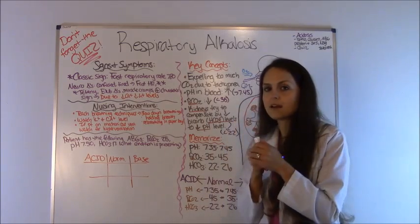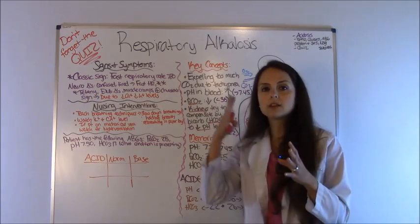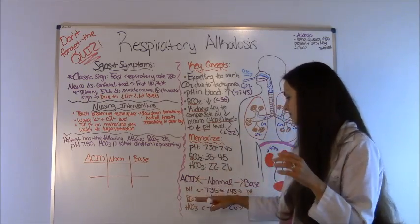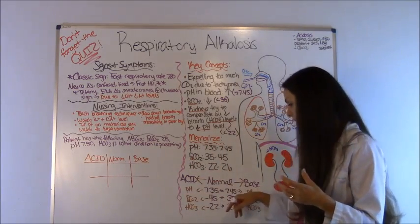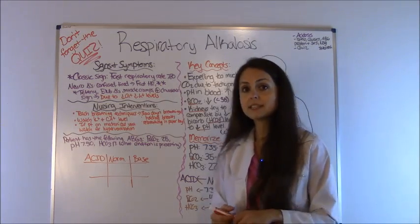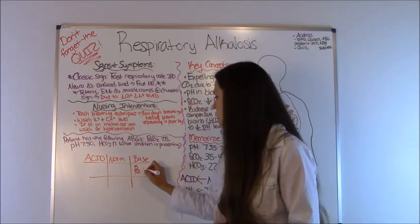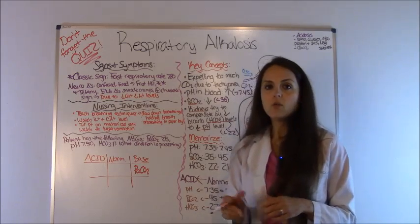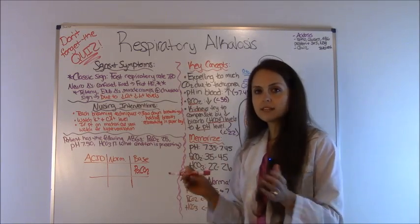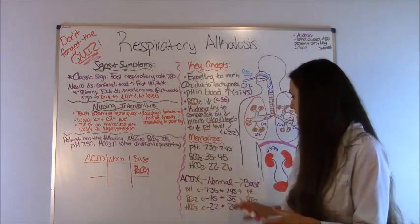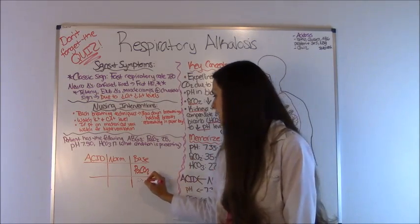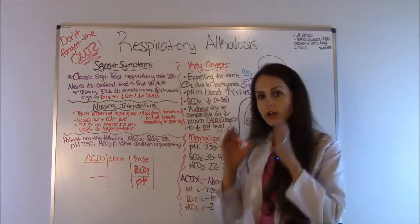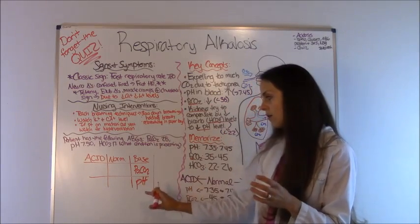We look at the PaCO2 first and it reads 25. A normal PaCO2 is 35 to 45, so 25 is not normal. Since anything less than 35 is alkalotic, we place PaCO2 under the base column. Next, the pH is 7.5. A normal pH is 7.35 to 7.45, and anything greater than 7.45 is alkalotic, so our pH goes under the base column as well.